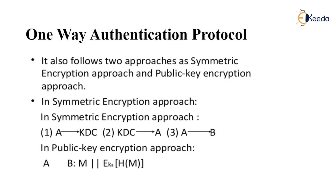Now let's see how one-way authentication takes place. It also follows two approaches: the symmetric approach and the public key approach. In the symmetric encryption approach, the process is the same as in mutual authentication — user A contacts the Key Distribution Center, which replies back with a key, and user A then uses that key to communicate with user B. In the public key approach, the message must be encrypted and a hashed message must be created.